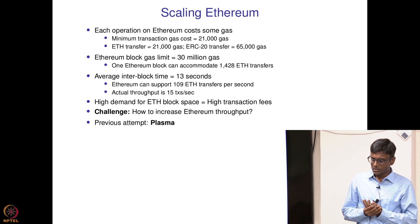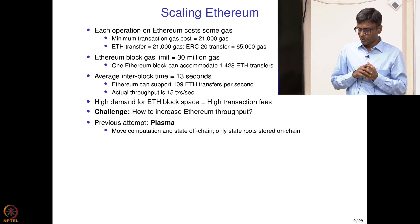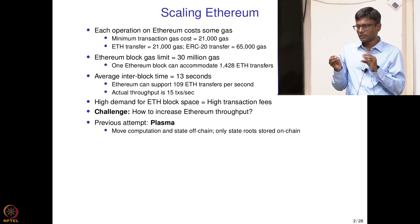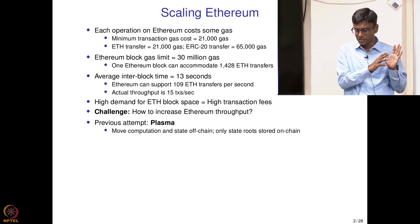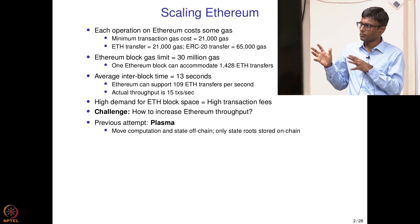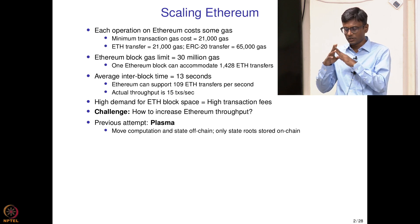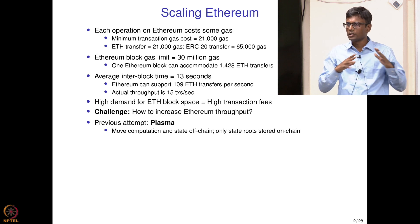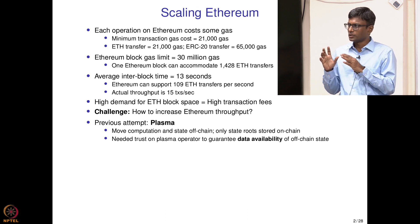There was a previous attempt called Plasma, about 4–5 years ago. The main idea was to move the computation and state off-chain — to a separate blockchain where computation happens and state variables are stored. What gets stored on Ethereum is only the state root, which is the Merkle root of the world state of that separate blockchain. The problem was that you needed to trust the plasma operator — the entity running that separate blockchain.